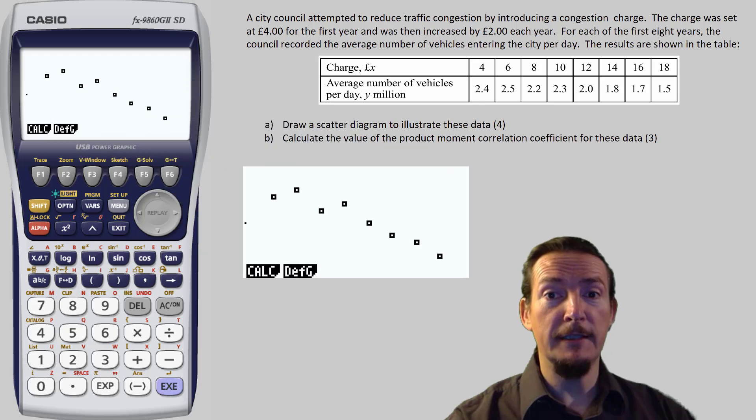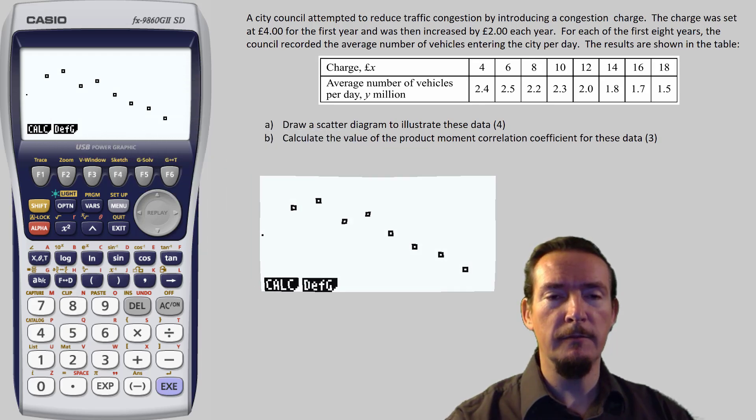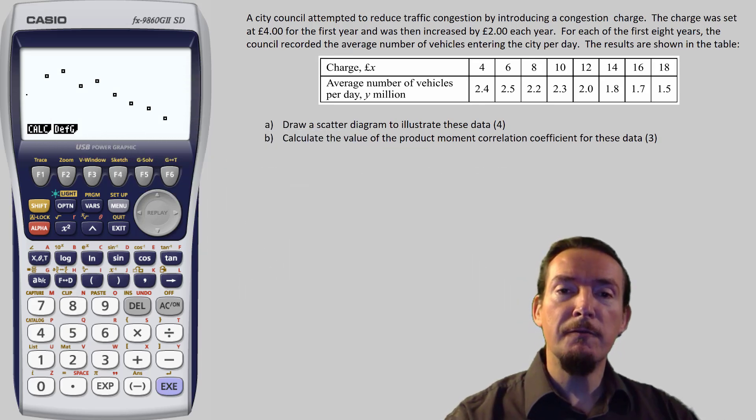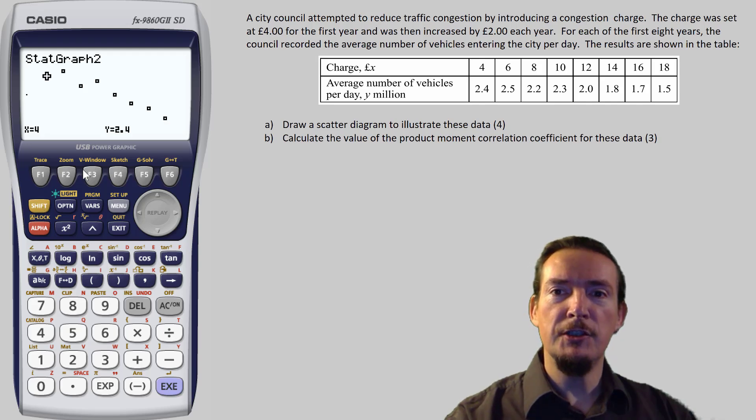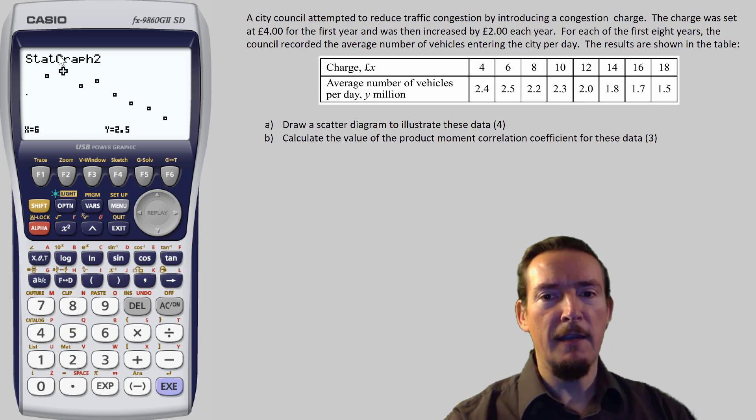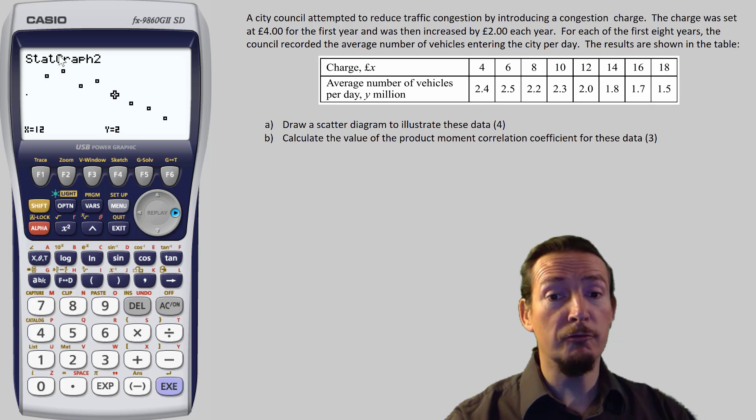Now sadly, we can't just print this out and stick it in our exam paper, but we can use it as a visual check that our hand-drawn graph is correct. Once the graph is drawn, you can then use the trace function, which is Shift F1, to show the actual plot points and their values, and you can use this to double check the values on your drawn graph.